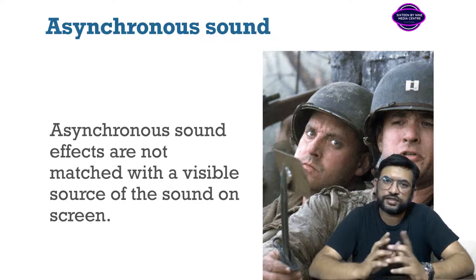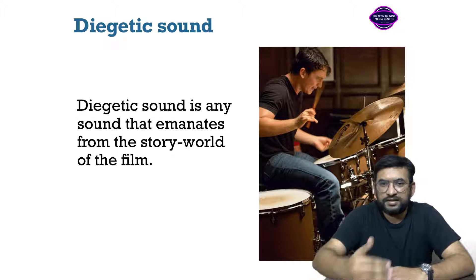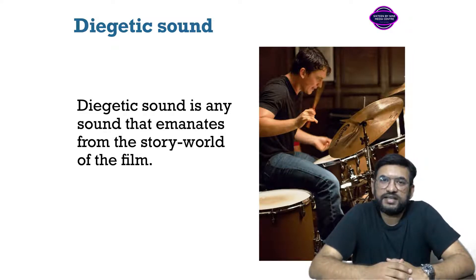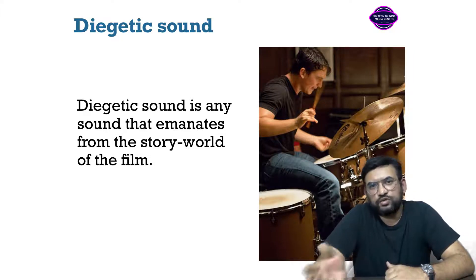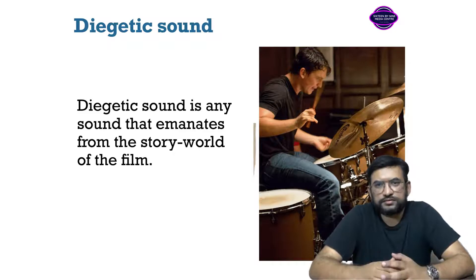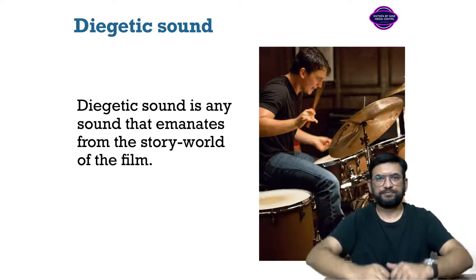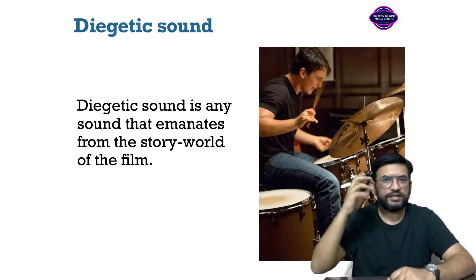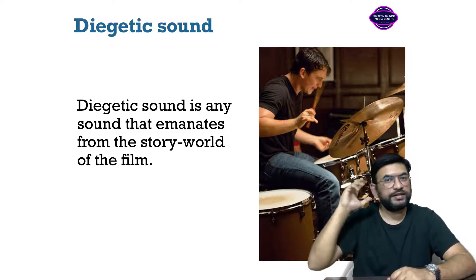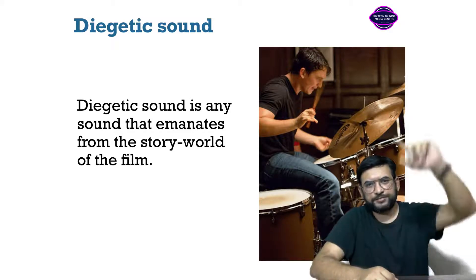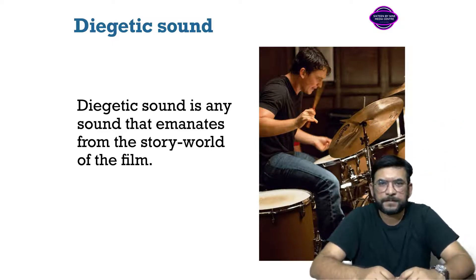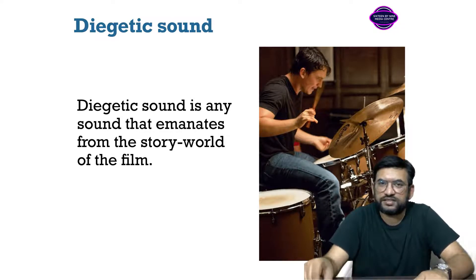To summarize the aesthetic types: fidelity has two parts — high fidelity and low fidelity. Then parallel and contrapuntal sound. Then asynchronous and synchronous sound. Next is diegetic and non-diegetic sound. Suppose you are watching a person walking upstairs — you can hear the footsteps and also music. The footstep sound is diegetic sound and the music is non-diegetic.